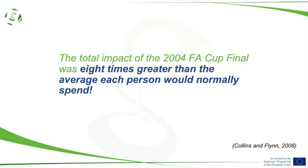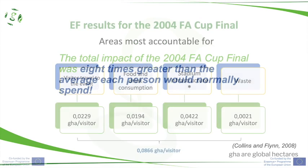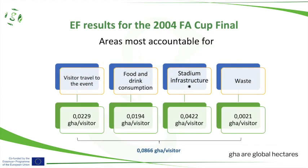That means that on the day I go to a sport event like this one, my ecological footprint would be eight times bigger than my normal day. The results showed that the ecological footprint mainly accounted for travel, food and drink consumption, infrastructure, and waste.